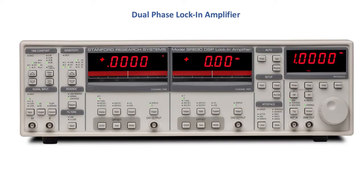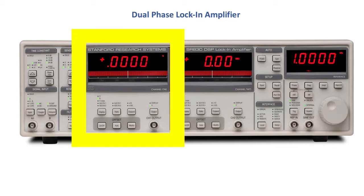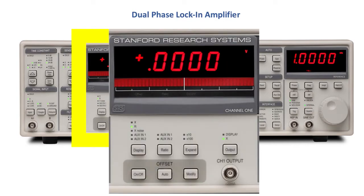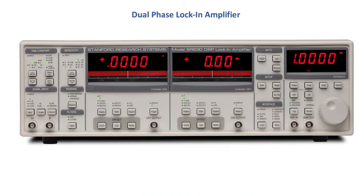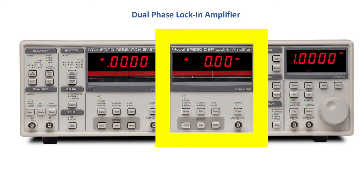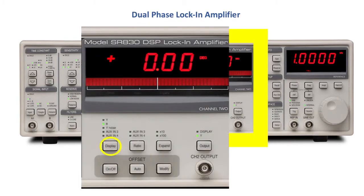So if we were to go and look at the front face of the dual phase lock-in we could see that right here we have our if we hit the display button we could change it to display whether it's X so the in phase or R the total. Then we can also look at the other panel which is channel 2 and we could hit display on that channel and we could look at either the Y or out of phase and quadrature component or θ the phase difference between them.